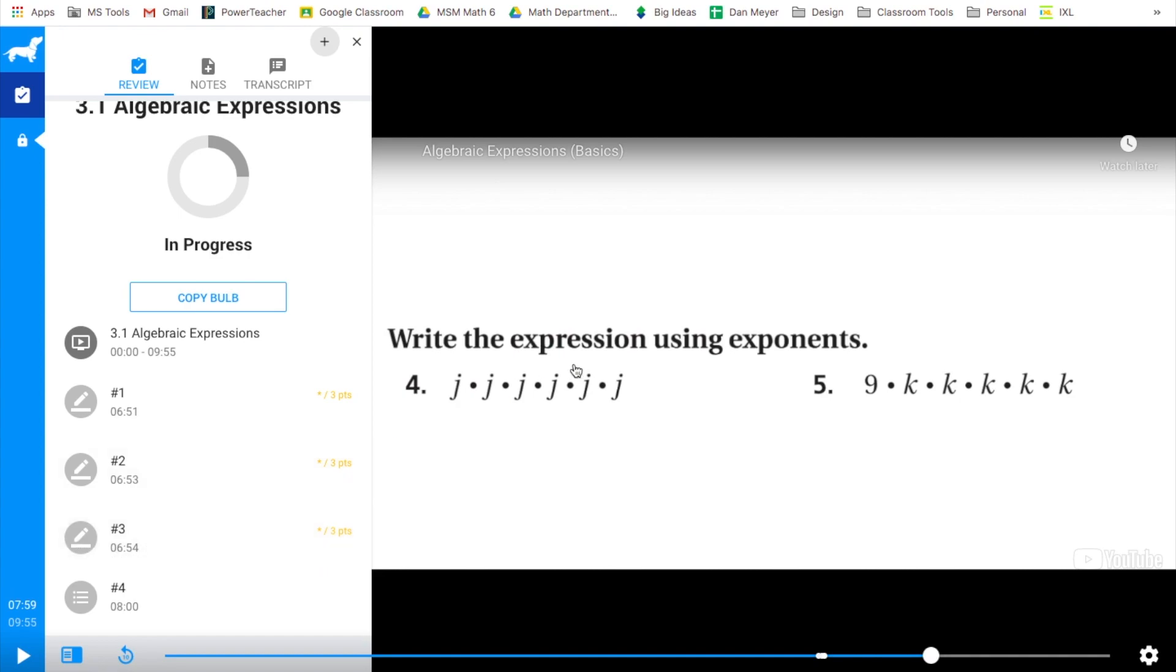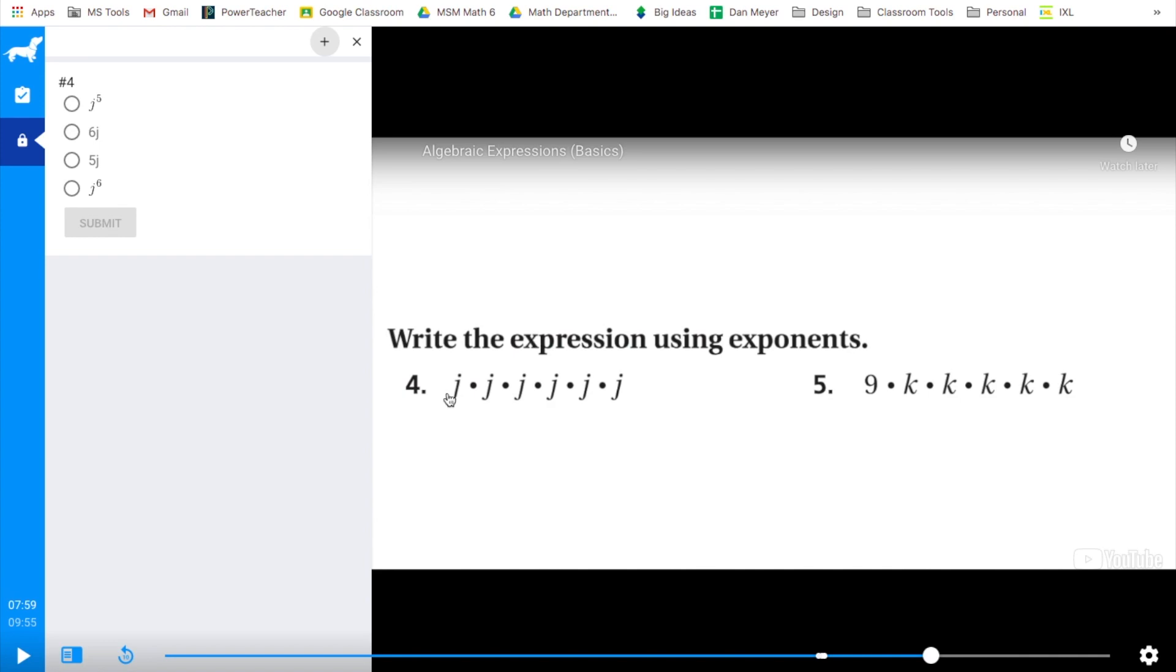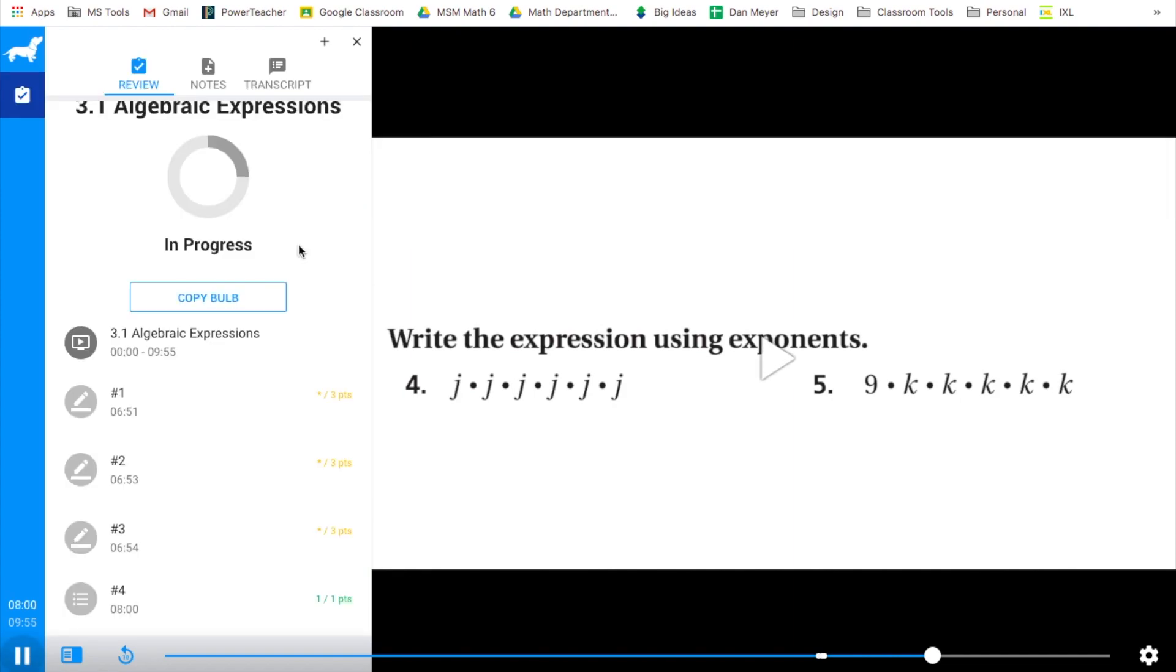Let's see what happens when I actually enter in my answer for number four on a multiple choice. Number four, that's going to be J to the sixth power. There it is. Submit. And I'm right. So with multiple choice, if your teacher has actually entered in the correct answer, you will get to see right away if you got it right or wrong. That's great. I got it right.